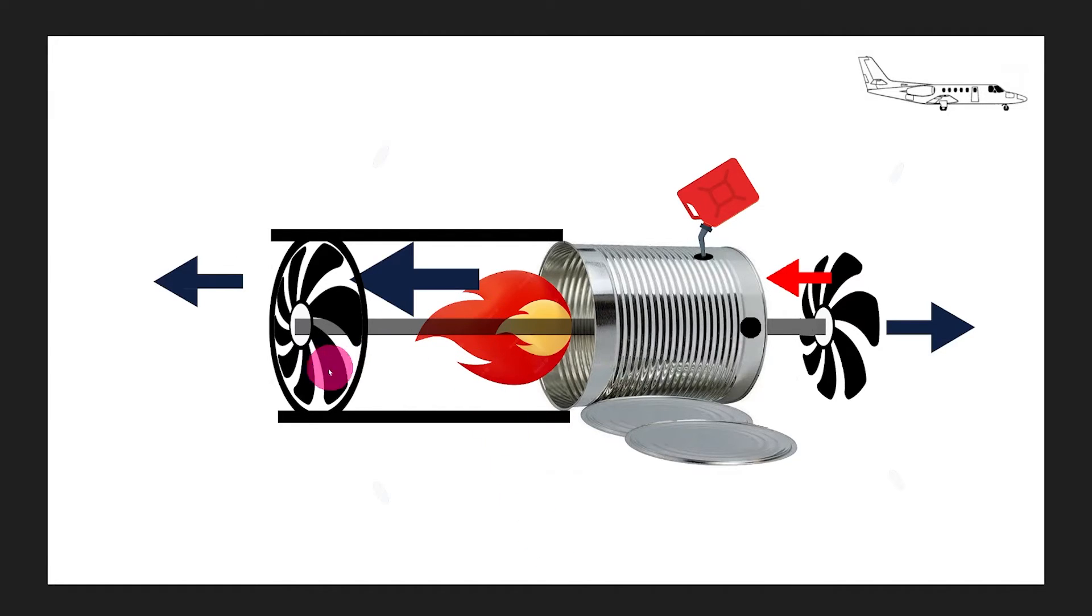So now with this bigger fire the fan in the back will turn even faster which will cause the fan in the front to also turn faster. So now we can have even more air and we can add more fuel and have an even bigger fire. You could see now that this is a vicious cycle of power. More air, more fuel, more fire, more thrust.